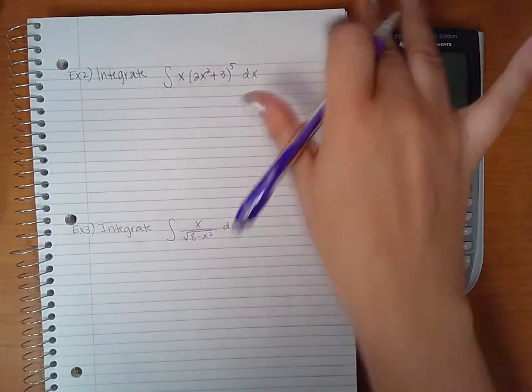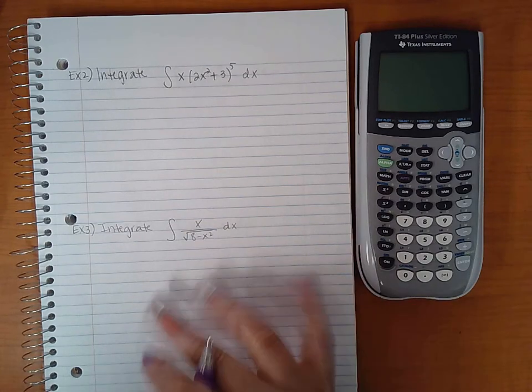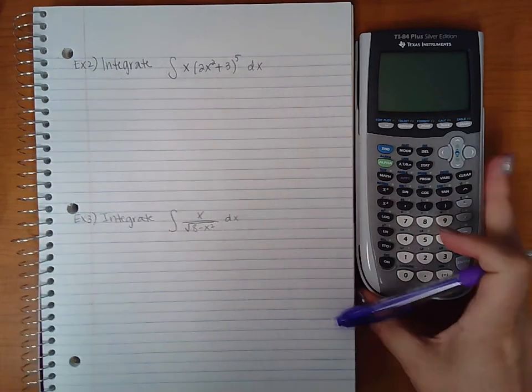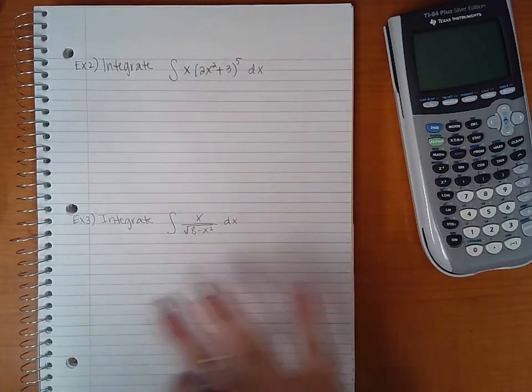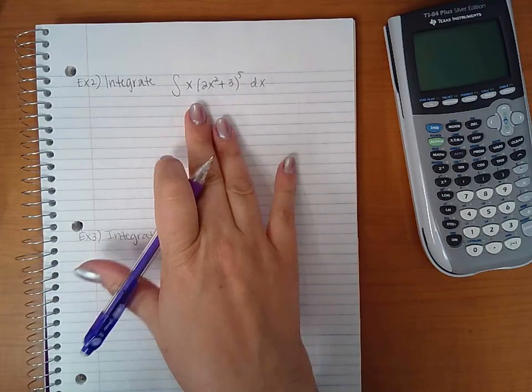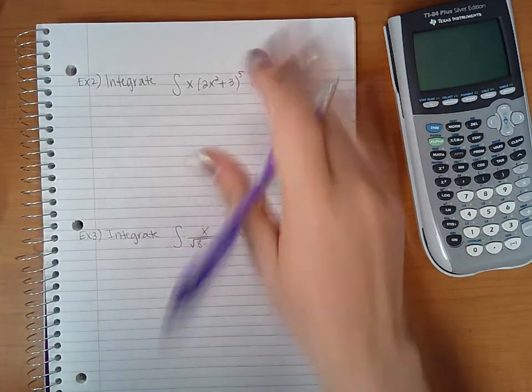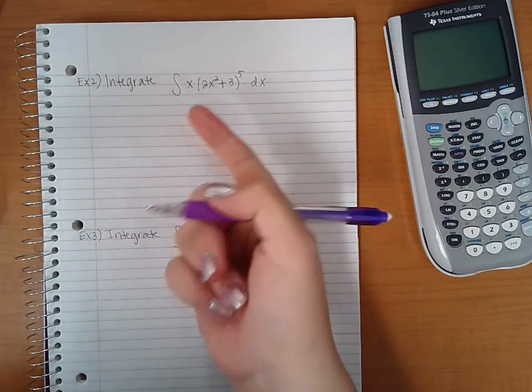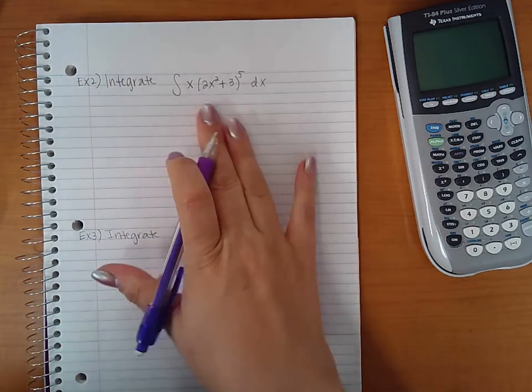Okay, this is integration by substitution part two. So here we have two examples that we're going to start with. First thing I have to do step one is to identify u and du.